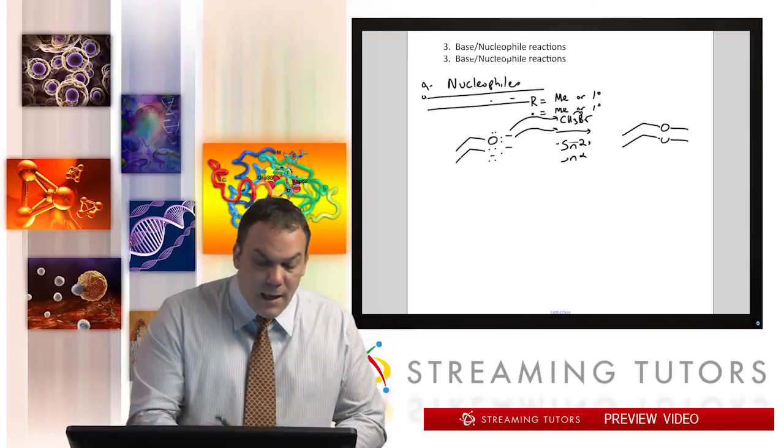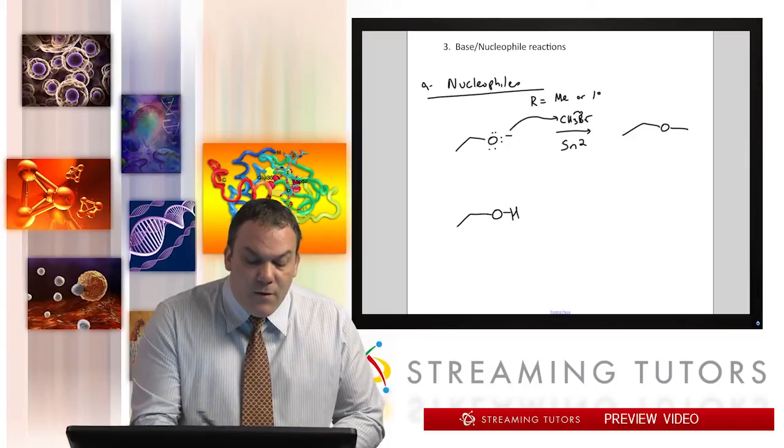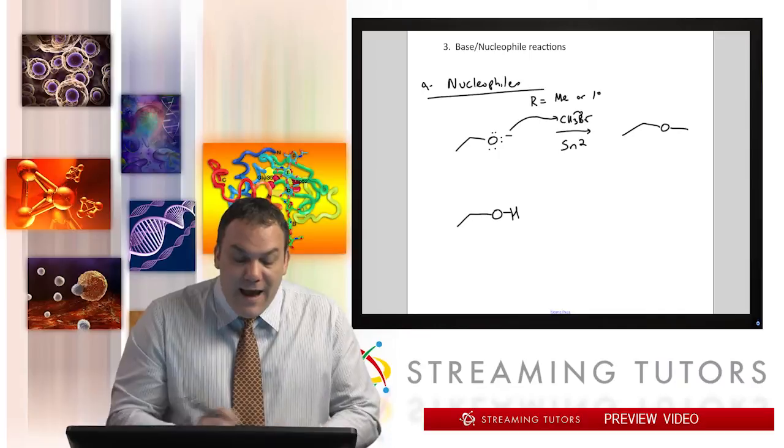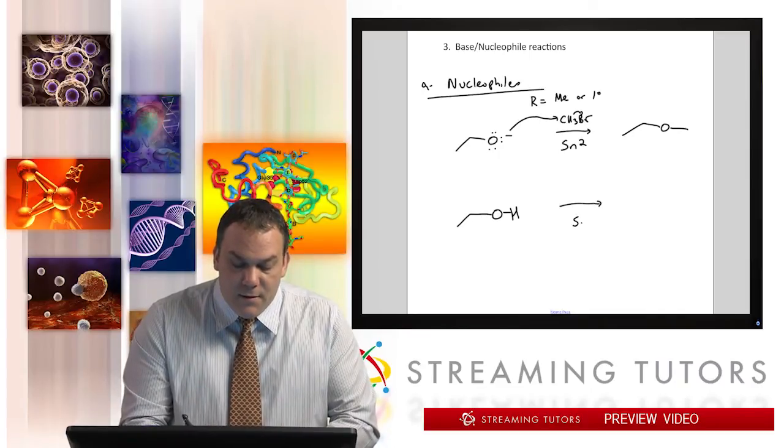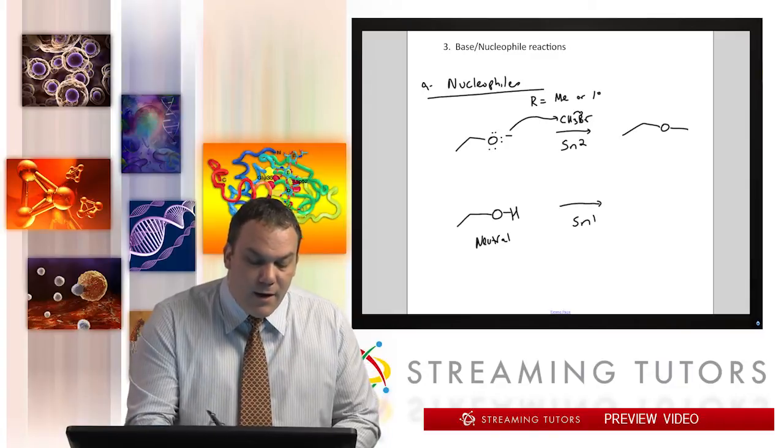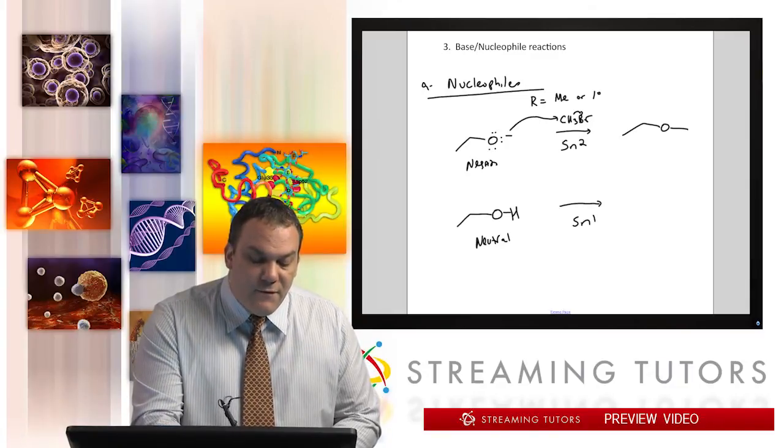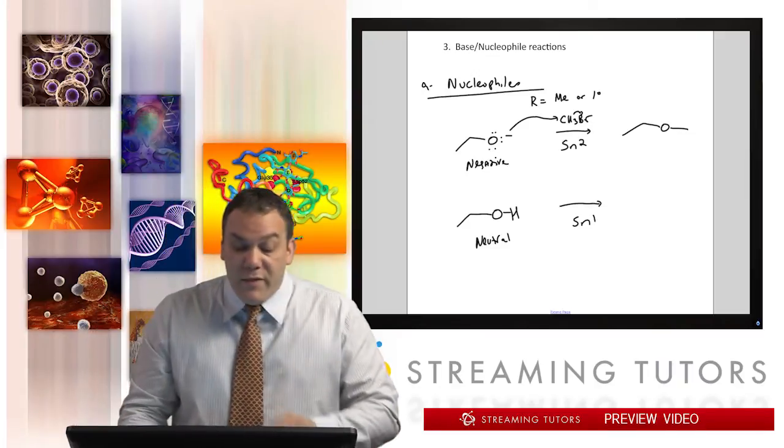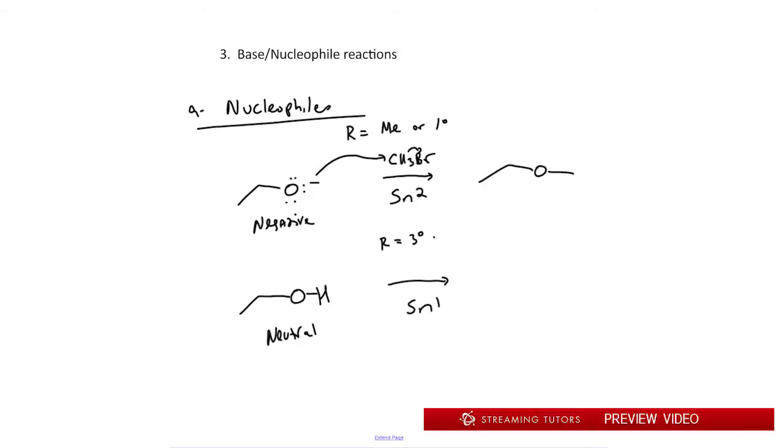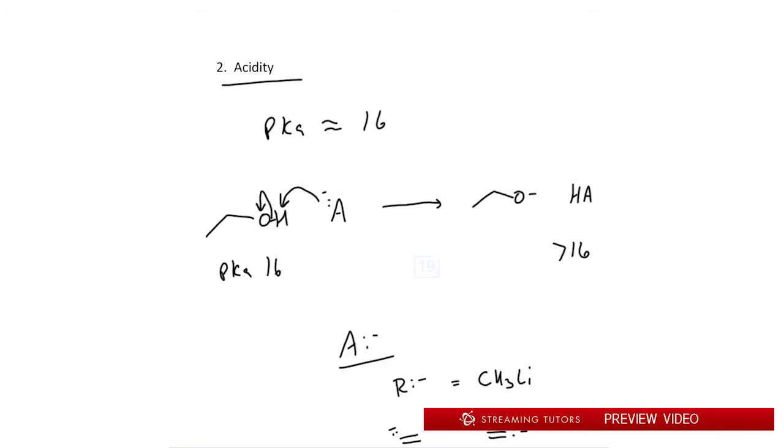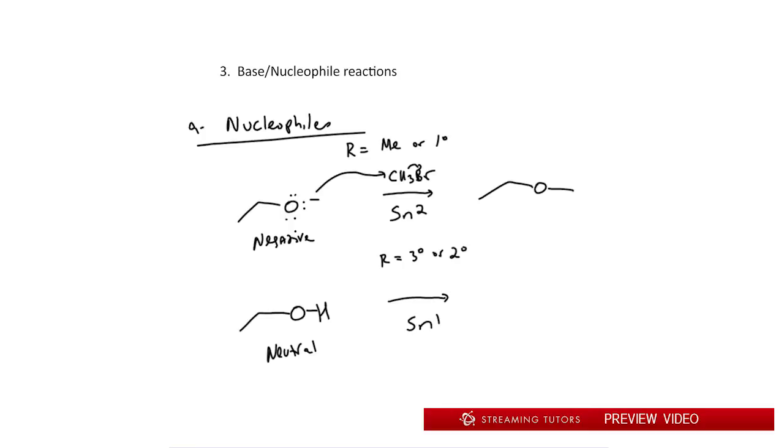Now another possibility is where we have an alcohol and we don't make it negative, we leave it neutral. And in that case, we want to go through an SN1 reaction. So when it's neutral, then it's favoring SN1. If it's negative, it favors SN2, not SN1. Now with SN1, the R group should equal tertiary or secondary. Now if we have, for example, a tertiary alkyl bromide, then this is going to go and attach onto the tertiary carbon like that, and that would be SN1.